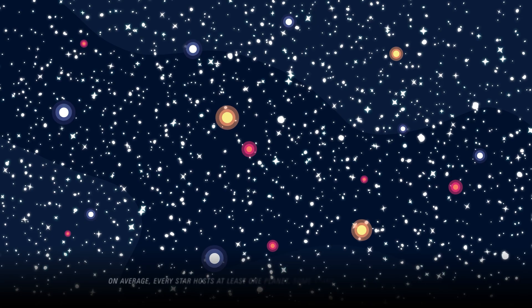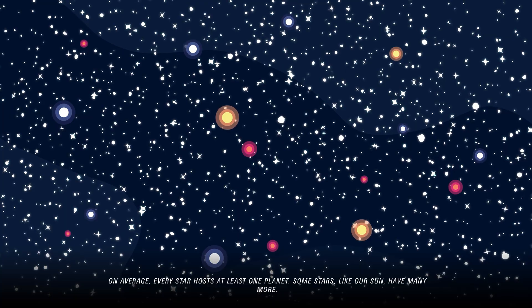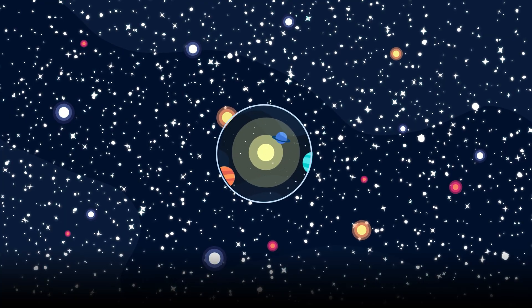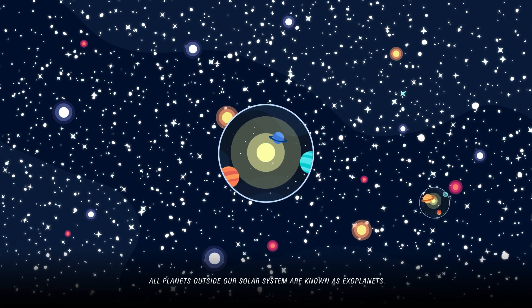On average, every star hosts at least one planet. Some stars, like our Sun, have many more. All planets outside our solar system are known as exoplanets.